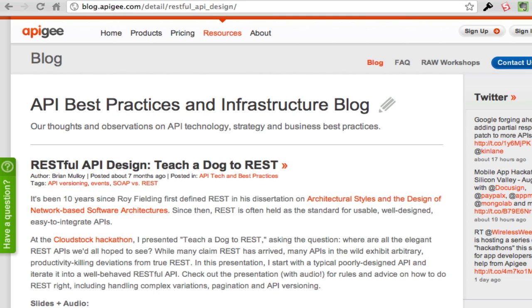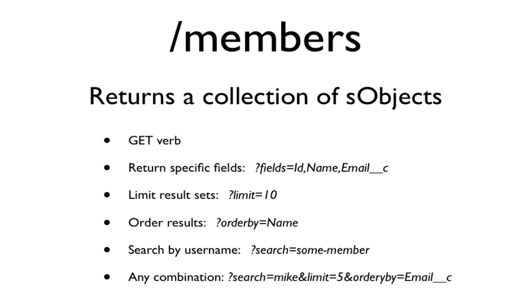So let's look at what we're actually going to be building here. We're building a member service for Cloud Spokes and we want it to have four functionalities. When people go to slash members, we want it to return a collection of S objects. This is going to be a GET verb, so they have to say GET members.